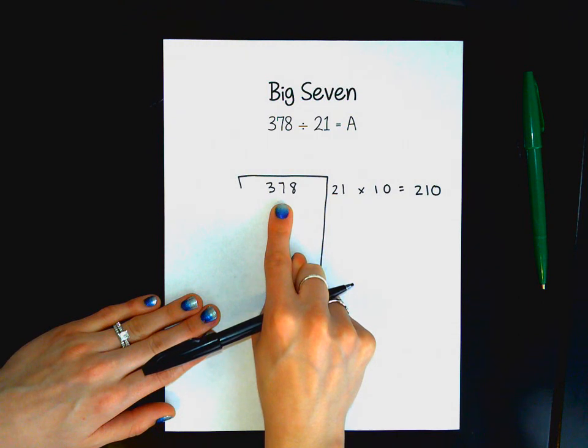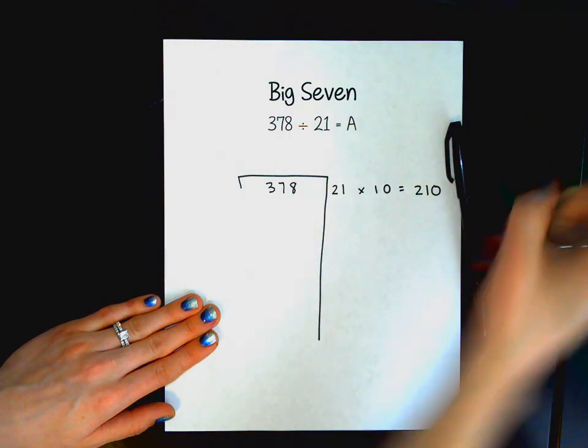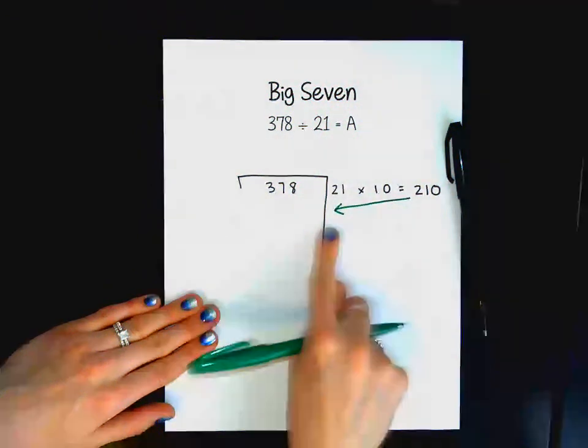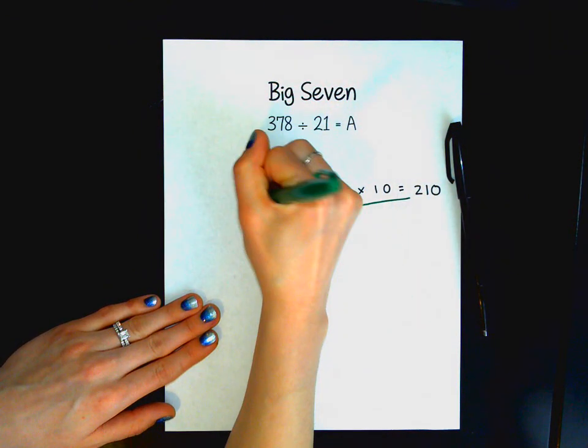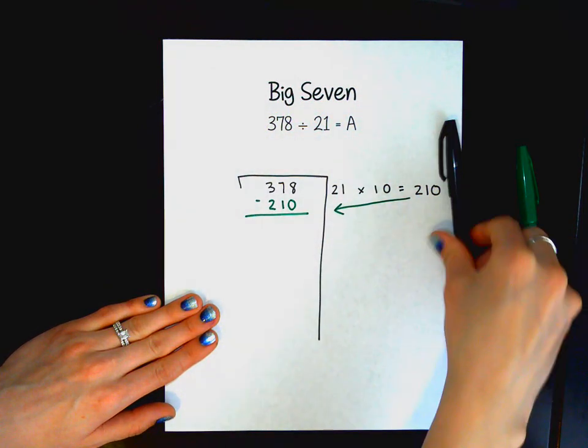So I always tell my students you can start with smaller numbers, but the bigger you start, the easier it will be. So once I have done that, I'm going to be taking this number. I like to draw an arrow so I keep track of where I'm going and I will be subtracting that from 378.